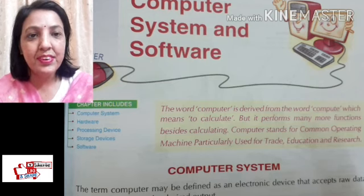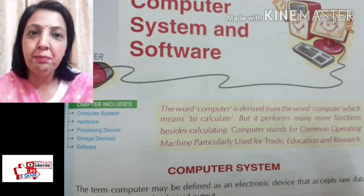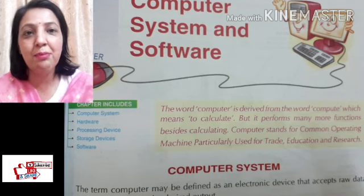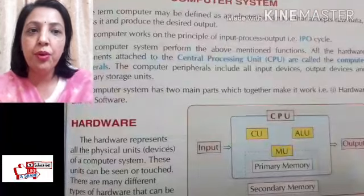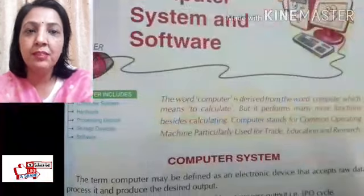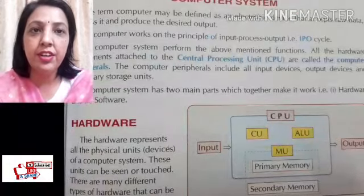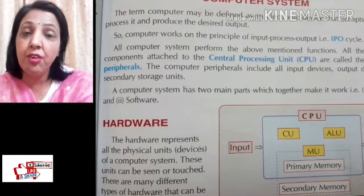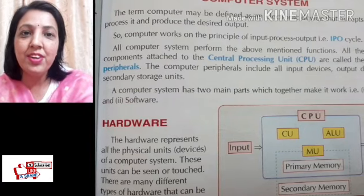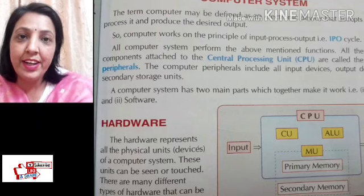What is a computer? The definition says: a computer may be defined as an electronic device that accepts raw data, processes it, and produces the desired result. So what is the computer? Computer is an electronic device that accepts raw data.